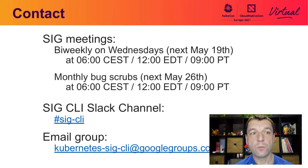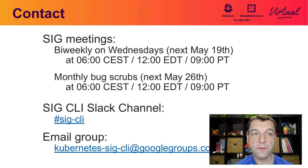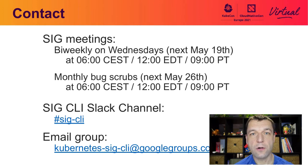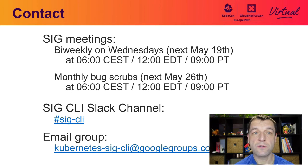Our meetings happen on Wednesdays, every other Wednesday at 6 pm European time, noon US Eastern, and 9 am Pacific time. On top of that, we have monthly bug scrubs happening at the same time. The next SIG CLI meeting is on May 19th, and the monthly bug scrub will be happening the following week, May 26th. You can find all of us in the SIG CLI Kubernetes Slack channel, and we also have a mailing list where you can reach us, ask for help, or provide suggestions for improvements.